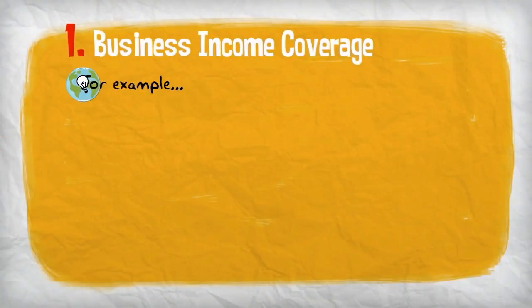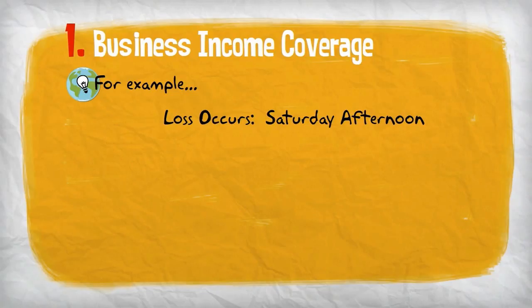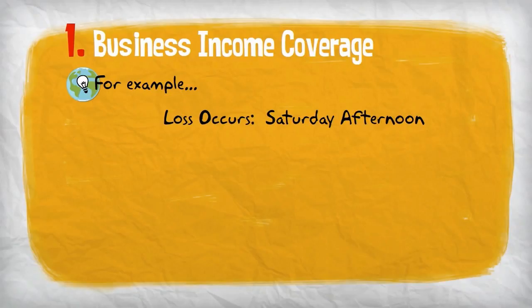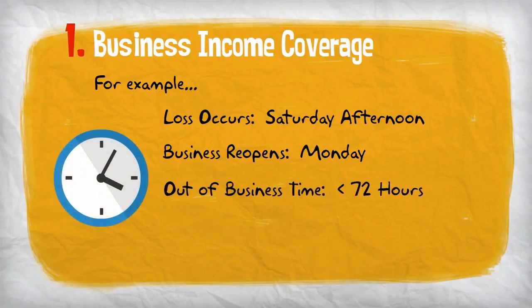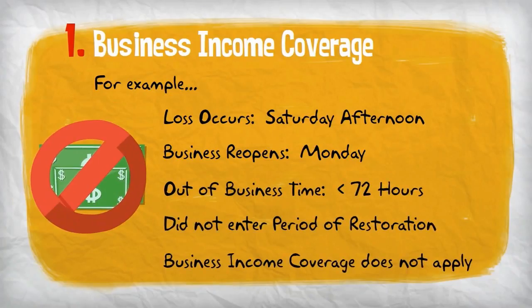For example, your business has suffered a fire. It happens on a Saturday afternoon and causes extensive damage. However, you are able to gather enough stock to reopen your business at another temporary location on Monday. Because it has not been 72 hours since your loss, you have not yet entered the period of restoration, so you would not be covered for any income lost on Saturday and Sunday.